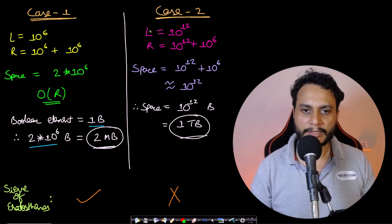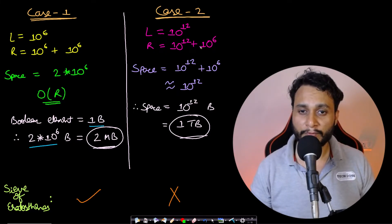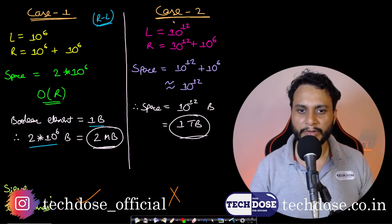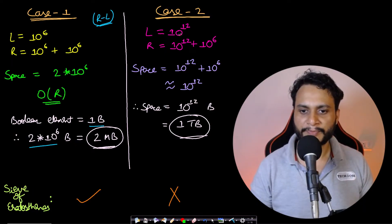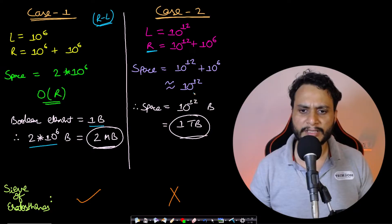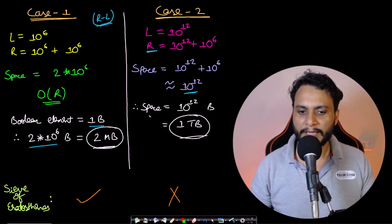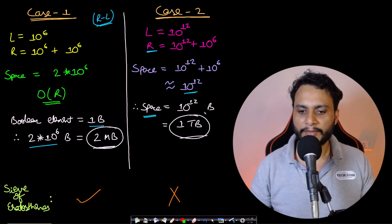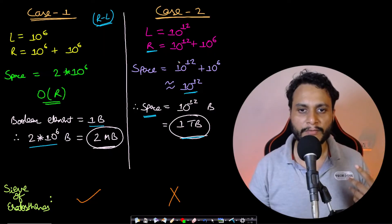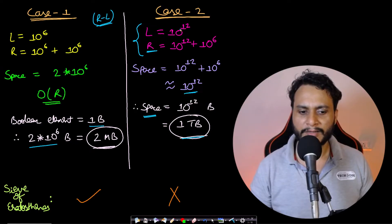In case two, L is 10 to the power 12 and R is 10 to the power 12 plus 10 to the power 6. The difference R minus L is the same in both cases — the gap is 10^6 — but the values of L and R have shifted from 10^6 to 10^12. If you follow the sieve of Eratosthenes, the space complexity is O(R), approximately 10^12. Considering each item as one byte, that is one terabyte of memory, which we clearly do not have.